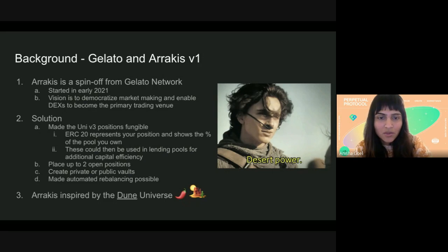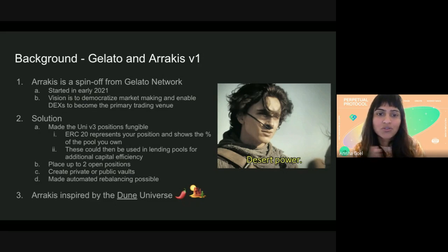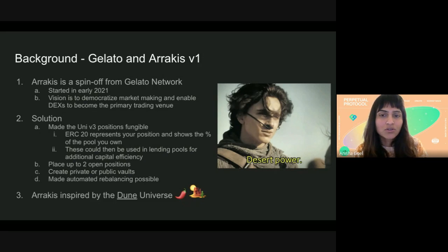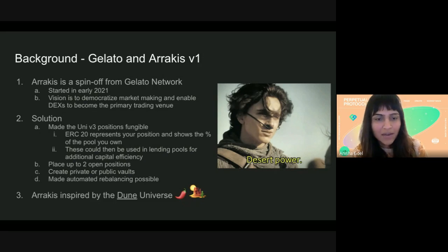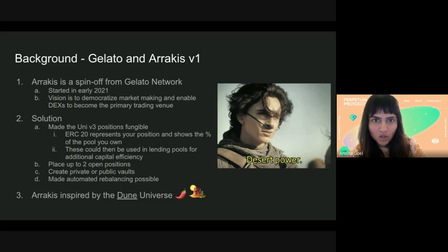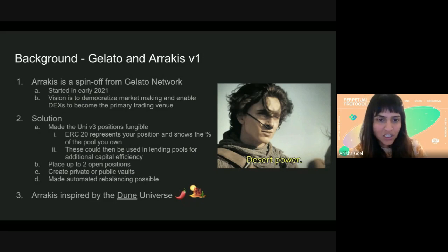They made the UniV3 positions fungible, and at that time you could create up to two positions — you could create a position, rebalance it at any time, and also create an additional position at a different range. The rebalancing could be automated, so you could set in parameters and run it through some strategy.